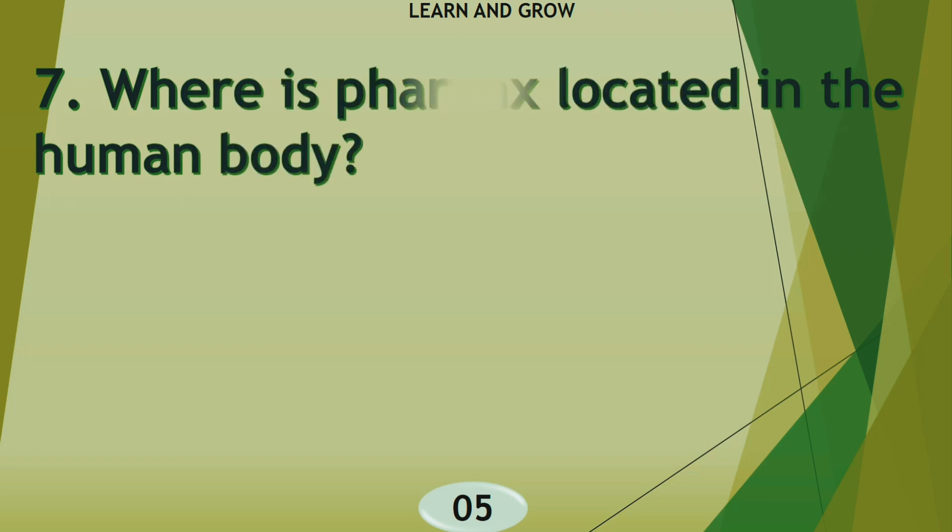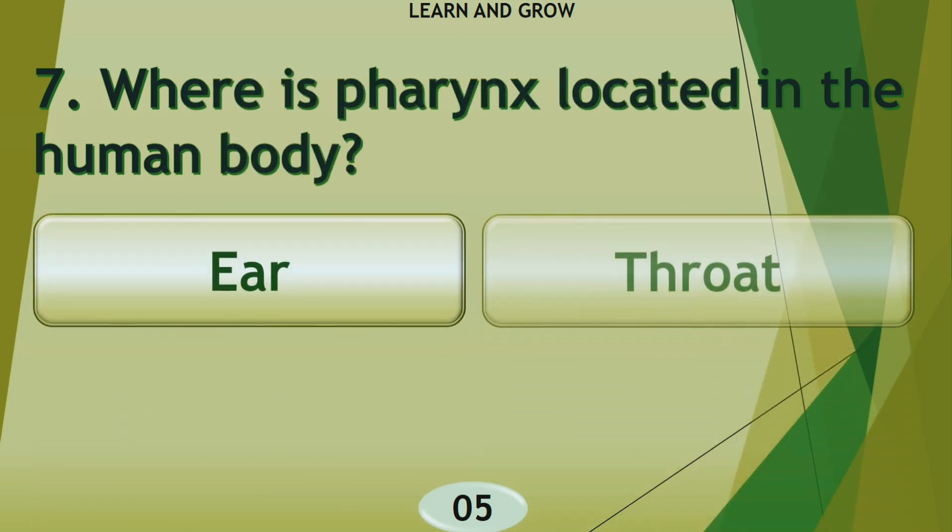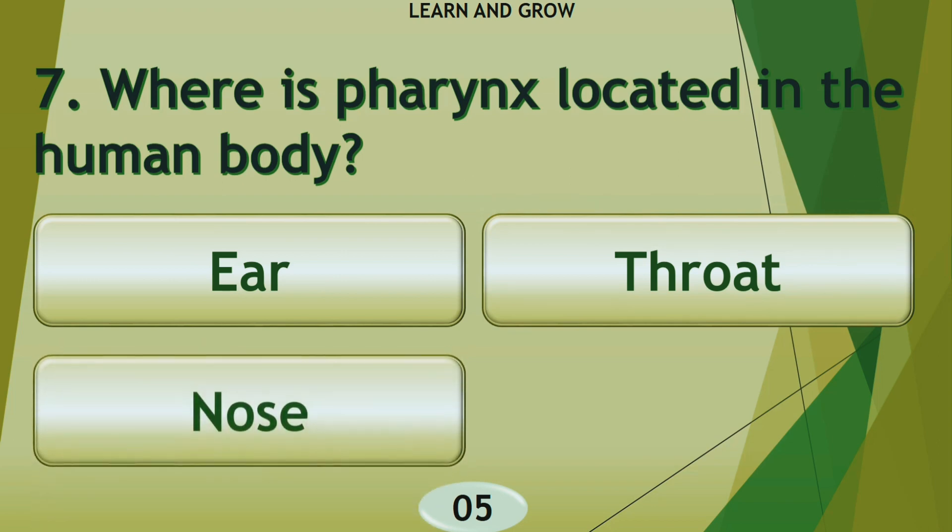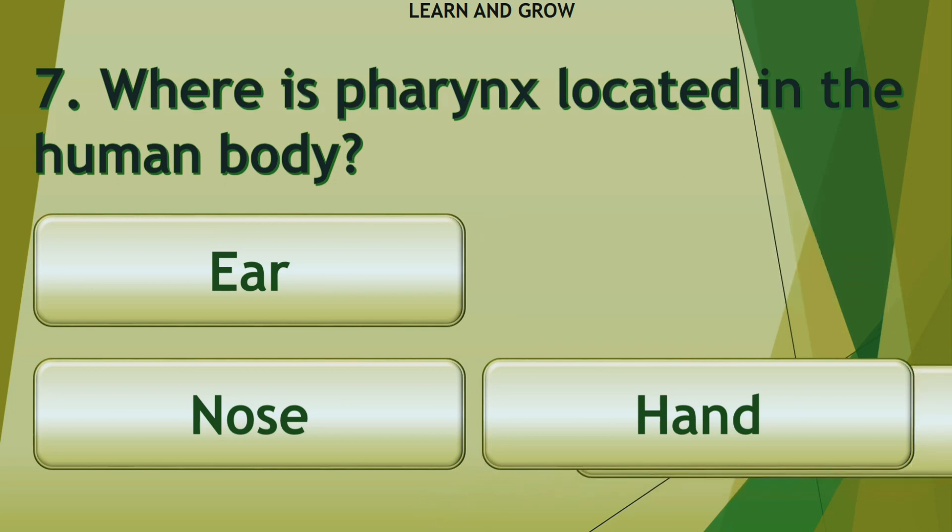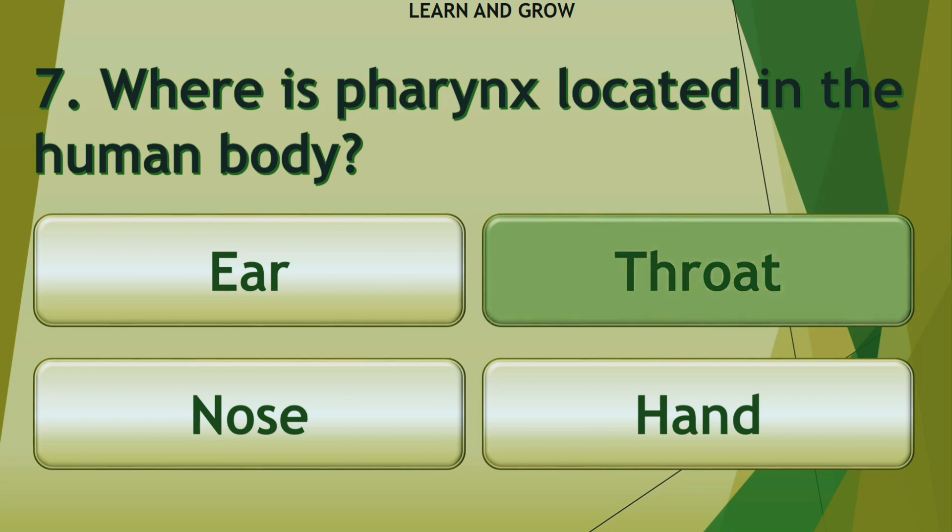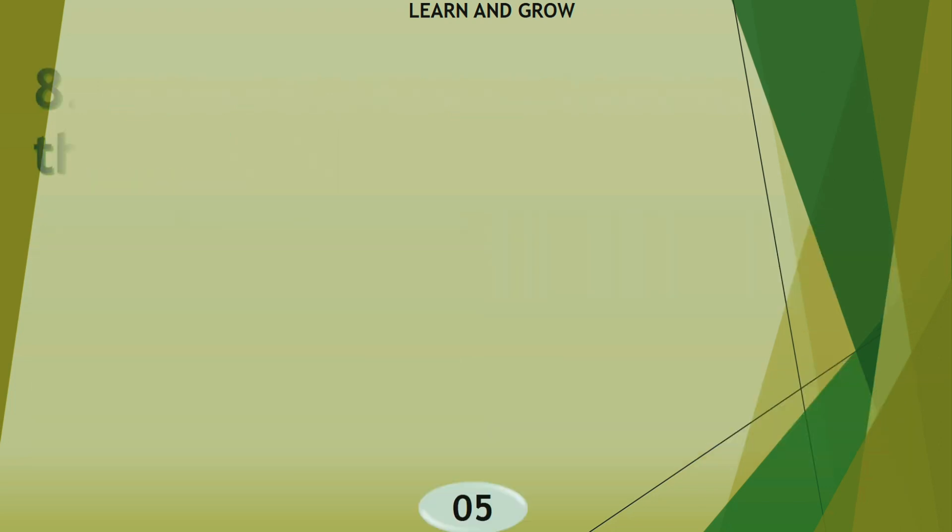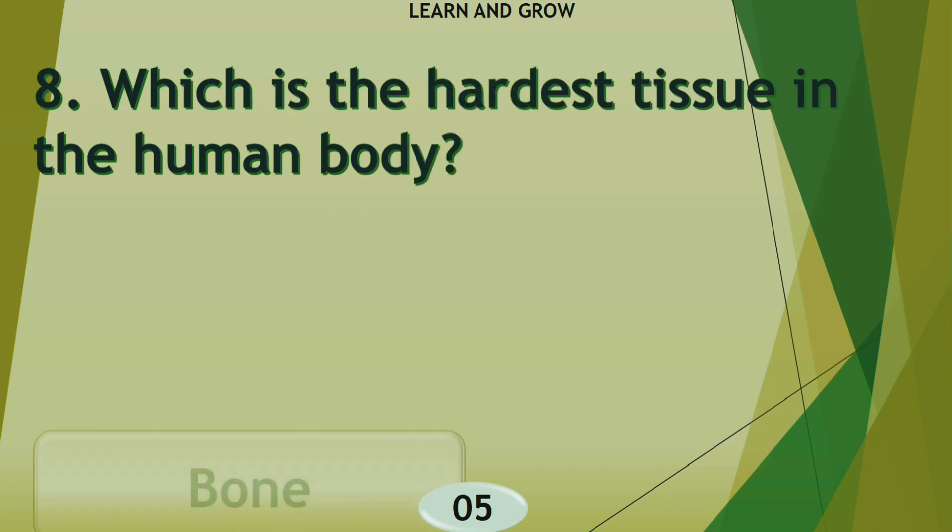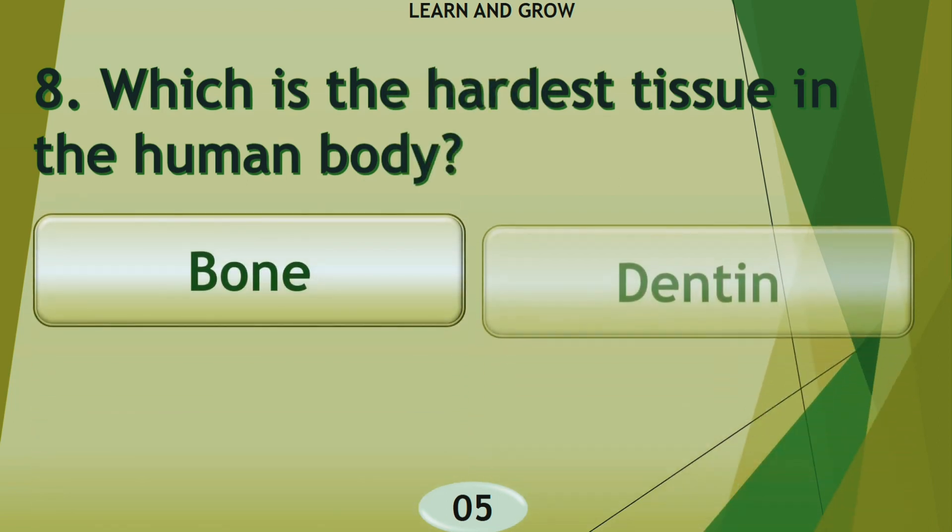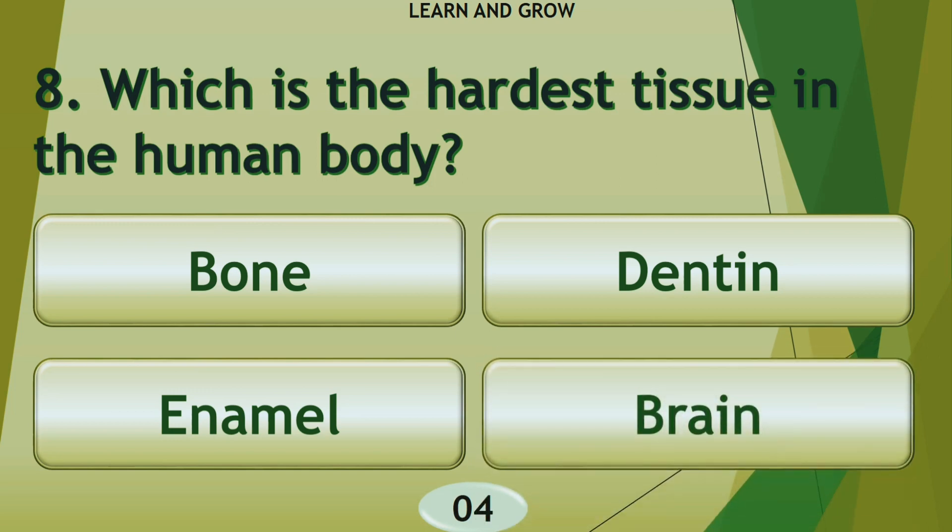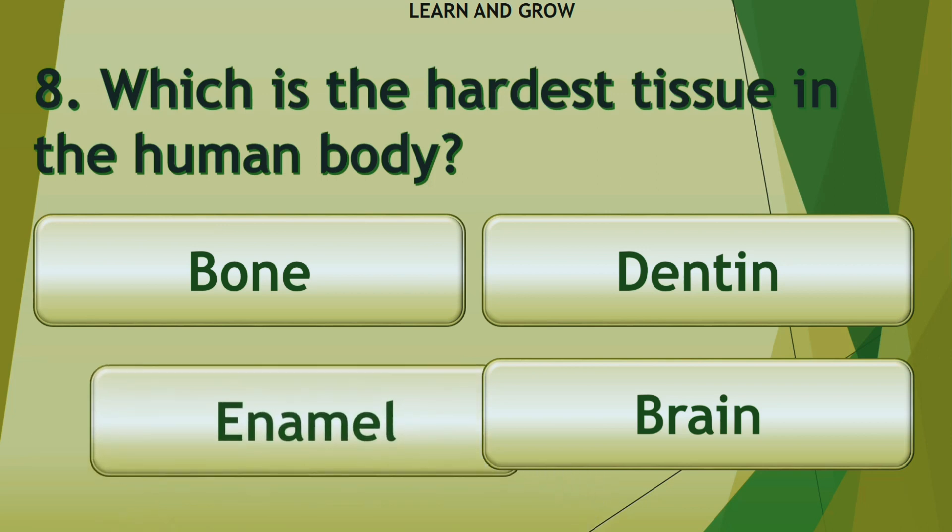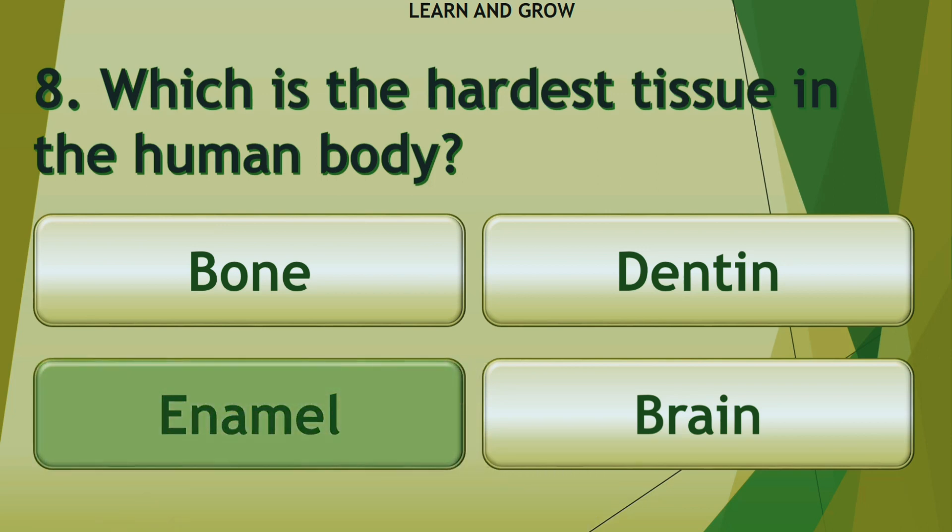Where is pharynx located in the human body? The right answer is throat. Which is the hardest tissue in the human body? The hardest tissue in the human body is enamel.